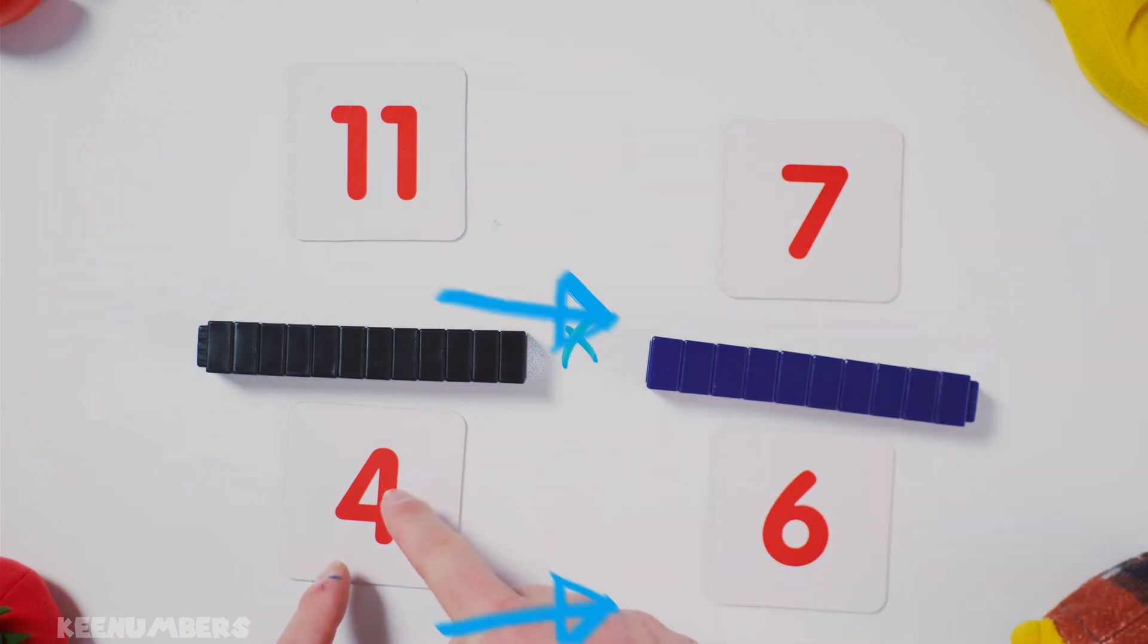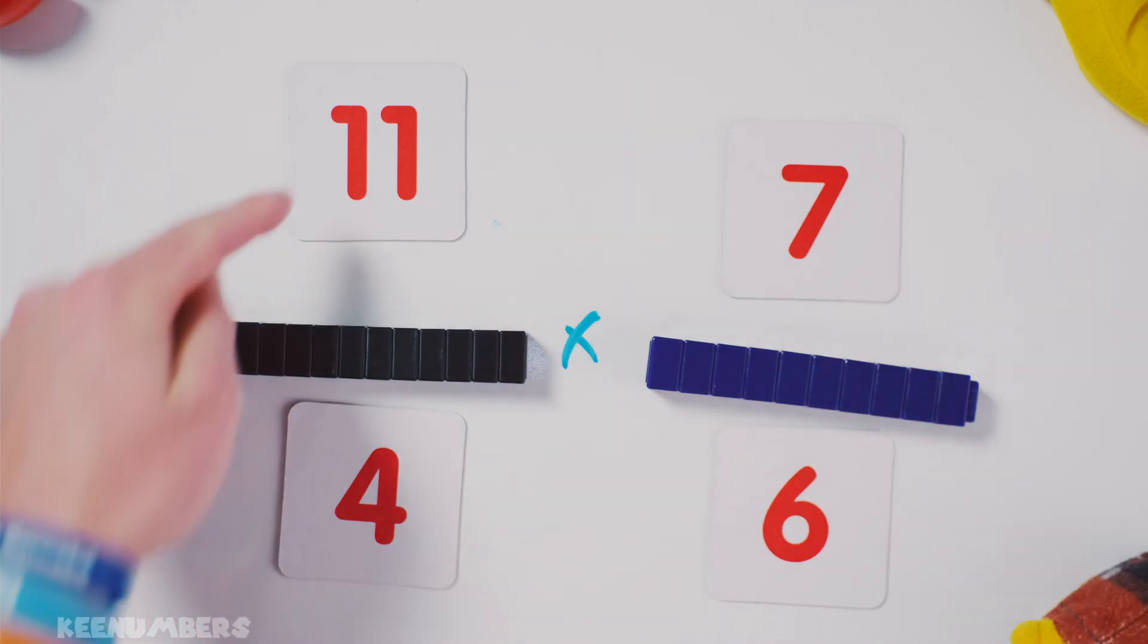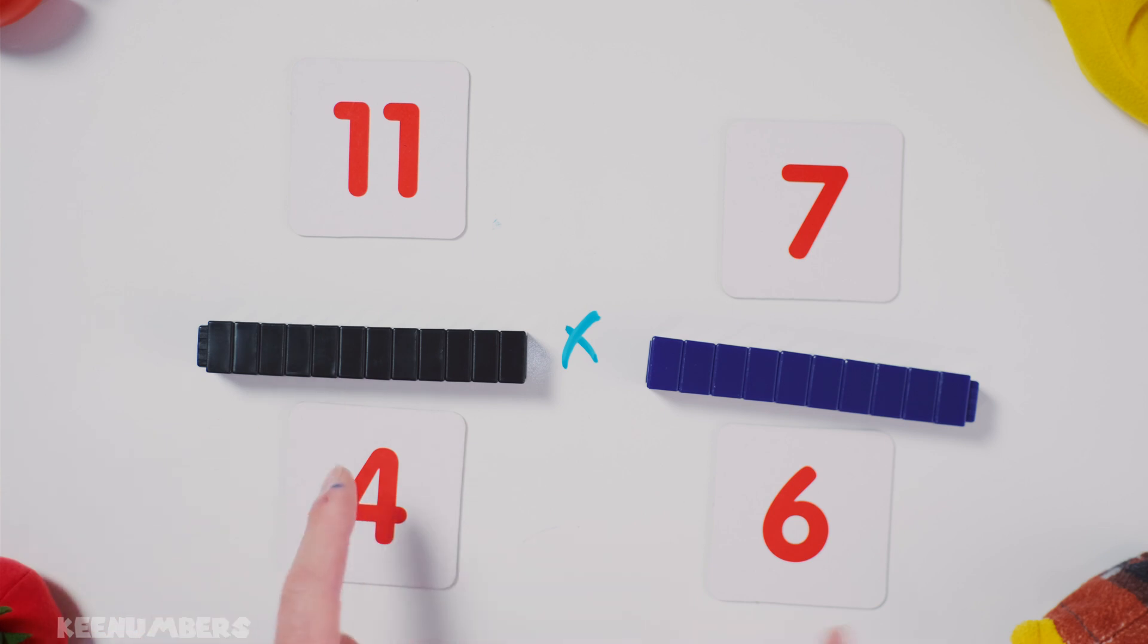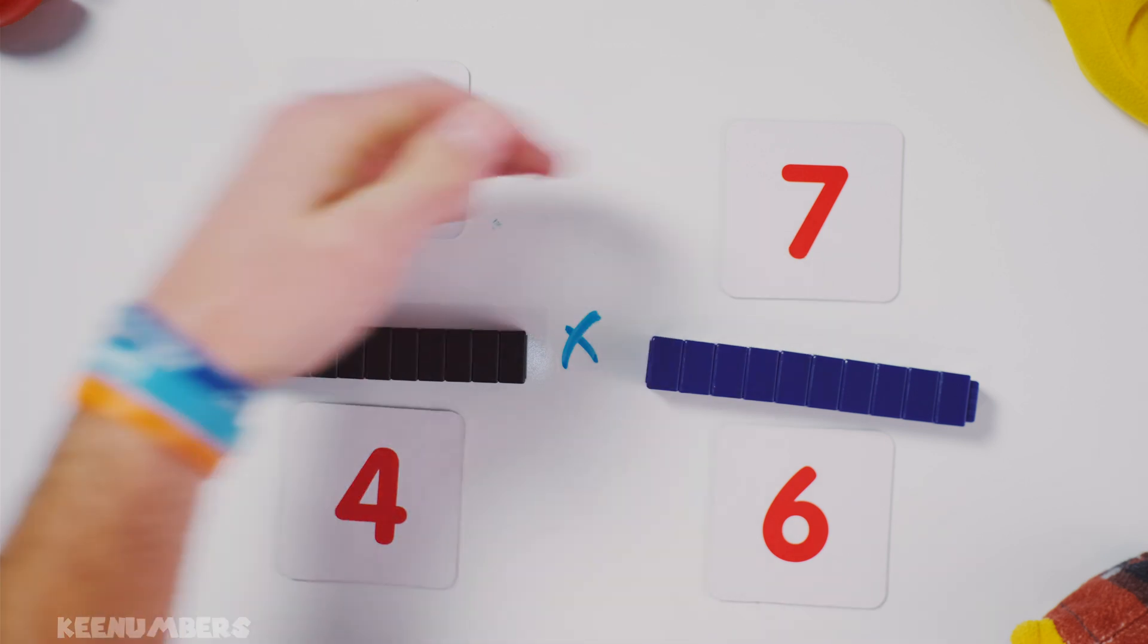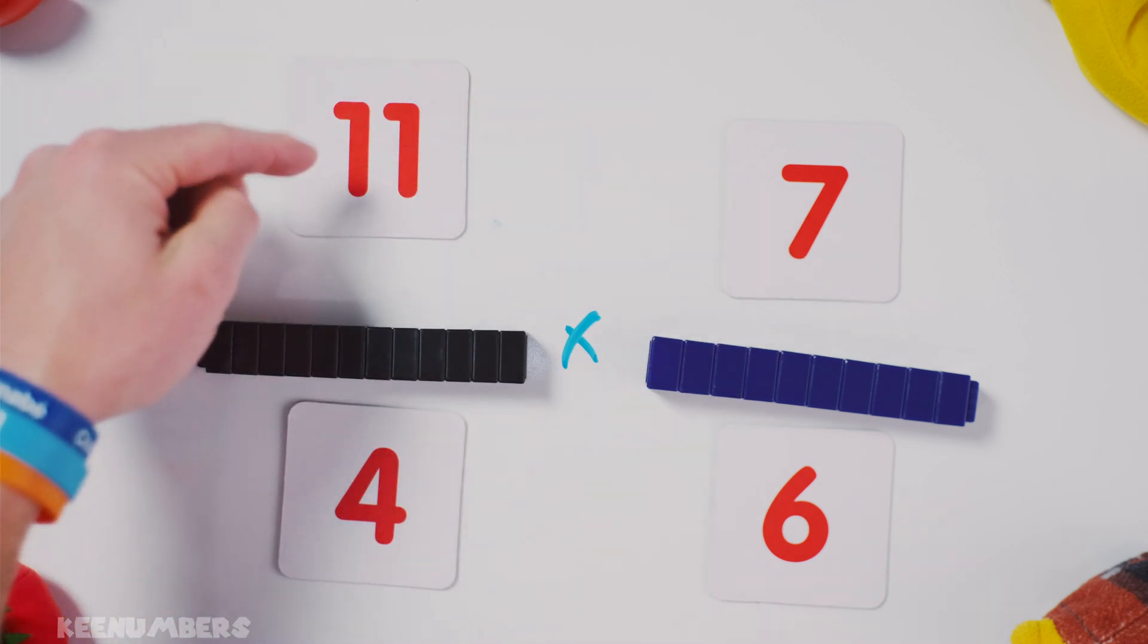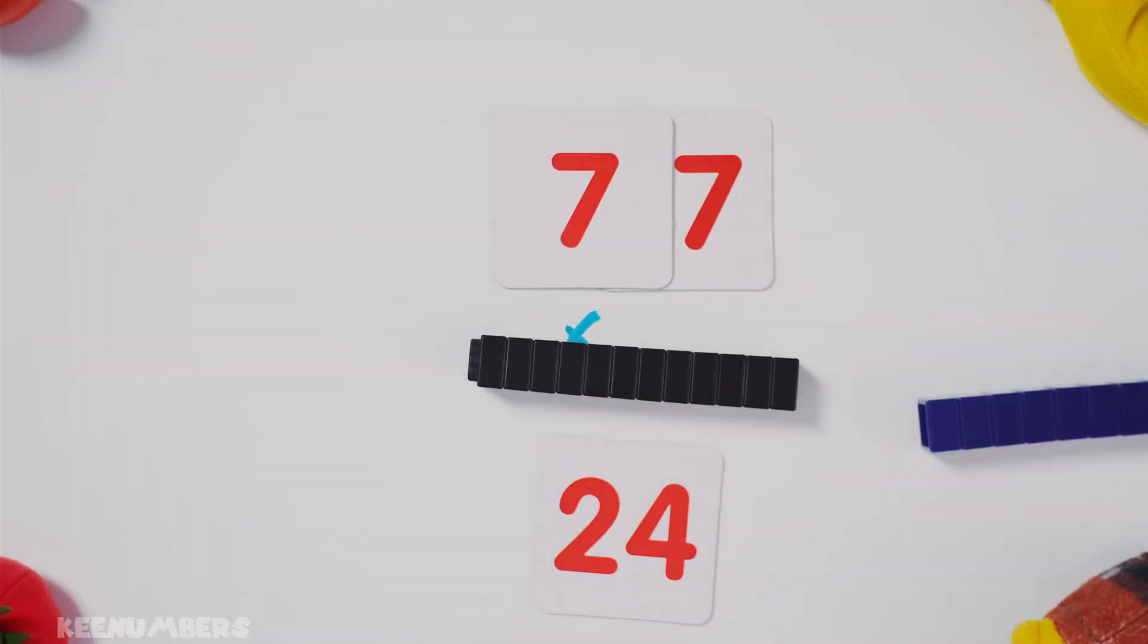Now seven's a prime number, so you can't cancel anything out with the four or the six. And the same with eleven. It's a prime number, so you can't cancel anything out there. So we're gonna go straight across. Seven elevens, that's gonna be seventy-seven. Six fours, that's gonna be twenty-four. And Bob's your uncle.